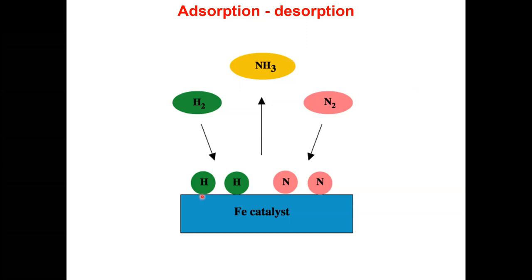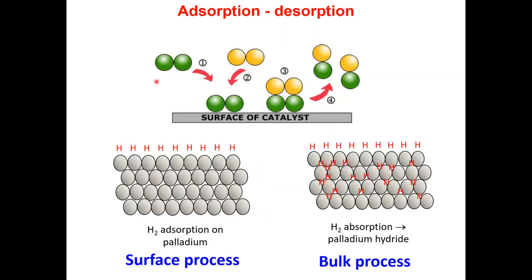Over there, it gets split into H and N atoms, a reaction happens, and you get ammonia back. This adsorption is followed by desorption — once ammonia is formed, it desorbs. For the reaction to happen, hydrogen and nitrogen must first come in contact with the catalyst. This is a multi-stage process involving surface or bulk processes where molecules come in, interact, and go out.